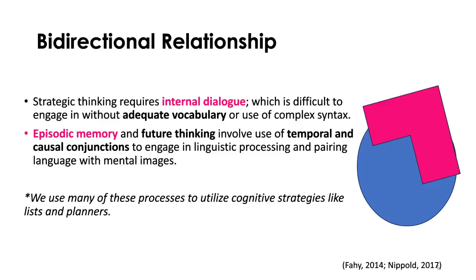Things like episodic memory and future thinking involve the use of temporal and causal conjunctions — words like before and after and because. We need those words to engage in linguistic processing and pair language with mental images. We also use these processes to utilize cognitive strategies like lists and planners. When you use a list, it works because in your head you can talk to yourself about what needs to be on that list, say the words in your head, and have an image of whatever you're writing down. That's how you know what words to physically write on that list.